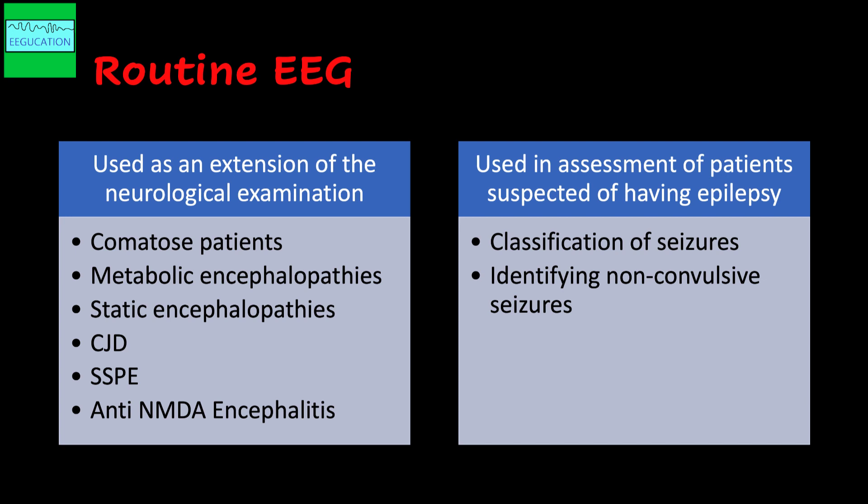Conditions specifically like CJD, subacute sclerosing panencephalitis, and NMDA encephalitis have some electrographic signatures — not pathognomonic, but highly suggestive of these conditions. I also use routine EEG in assessment of patients suspected of having epilepsy. EEG helps me classify whether these are focal onset seizures or generalized seizures, and it helps determine whether a patient has a non-convulsive seizure, aiding in management.